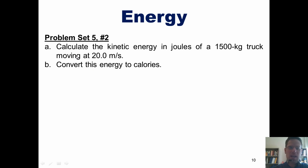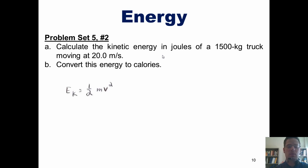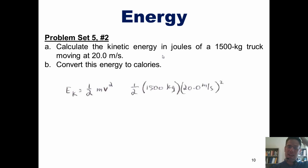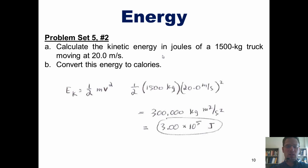Let's begin with Part A. To convert the mass of this truck and its velocity into kinetic energy, I have to remember that kinetic energy equals one half mass times velocity squared. So kinetic energy equals one half times 1500 kilograms multiplied by 20 meters per second squared. That gives a final answer of 300,000 kilograms times meters squared per second squared, which is the same as 3 times 10 to the fifth joules.